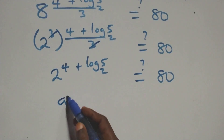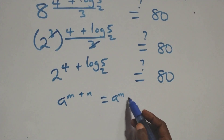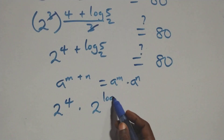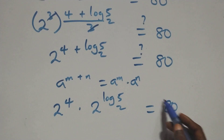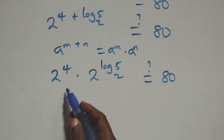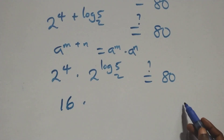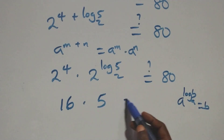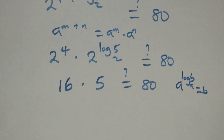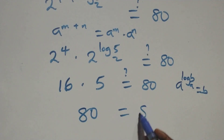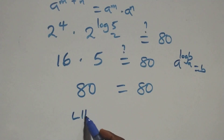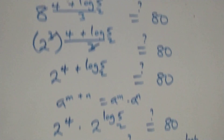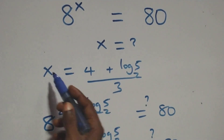We have 2 raised to the power (4 plus log₂5). Since 2⁴ equals 16, and using the rule a^(m+n) equals a^m times a^n, this becomes 2⁴ times 2^(log₂5). Using the rule a^(log_a b) equals b, we get 2^(log₂5) equals 5. So 16 times 5 equals 80, which equals 80 on the right-hand side. The left-hand side equals the right-hand side.